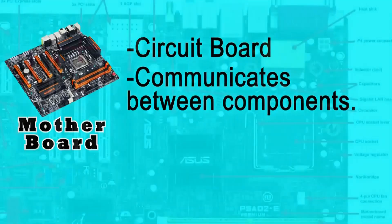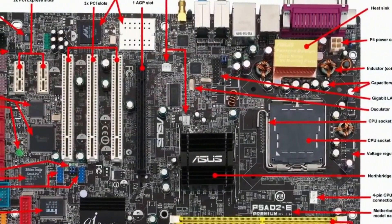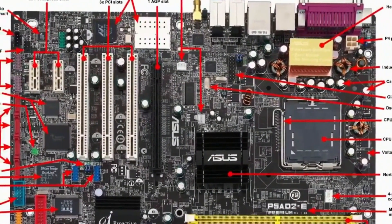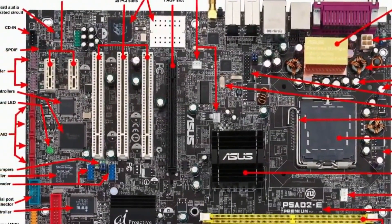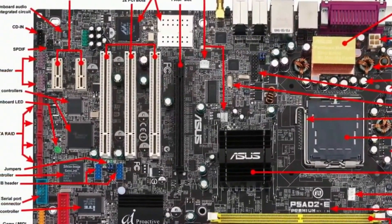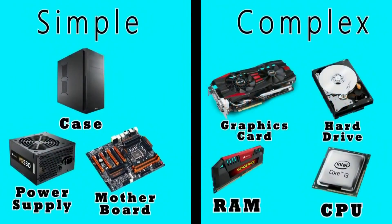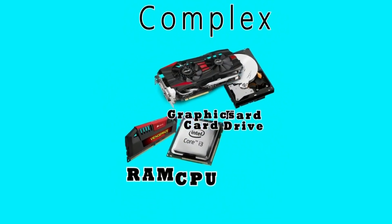We can see the Motherboard Circuit. The circuit board communicates between components. It is relatively cheap. It includes the graphics, RAM, and processor.